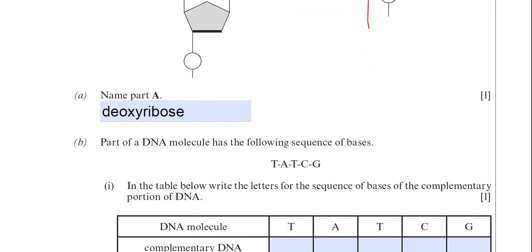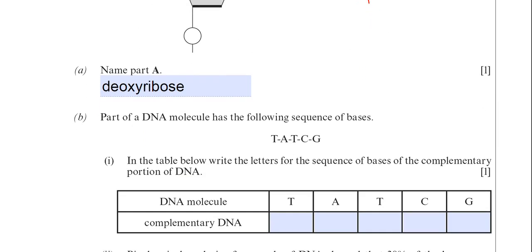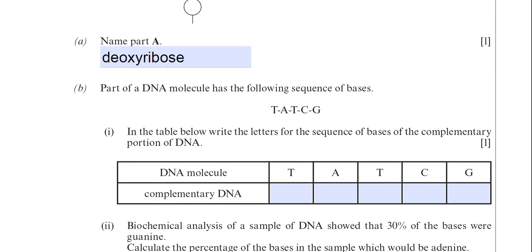Part B. Part of the DNA molecule has the following sequence of bases. TATCG. So in the table below write the letters for the sequence of bases of the complementary portion of DNA.